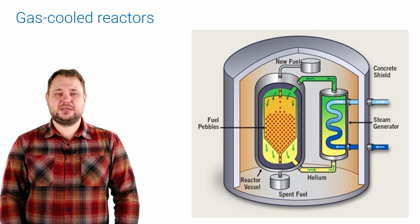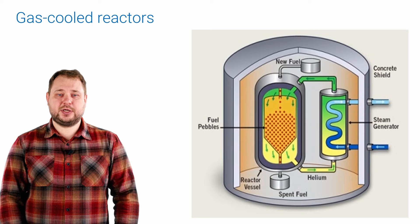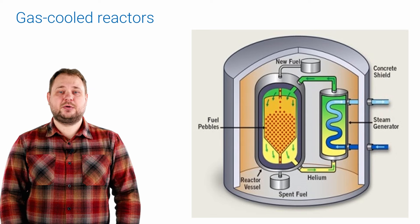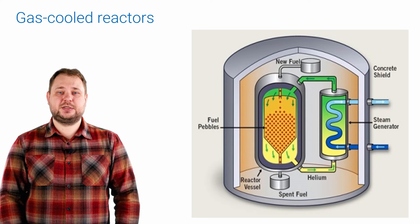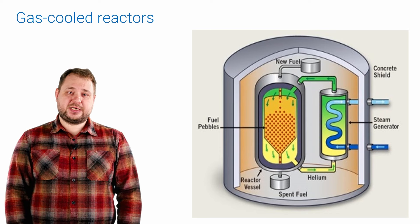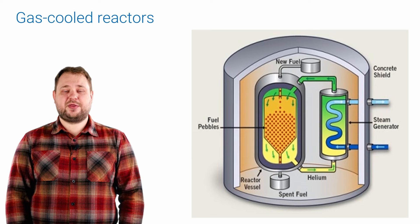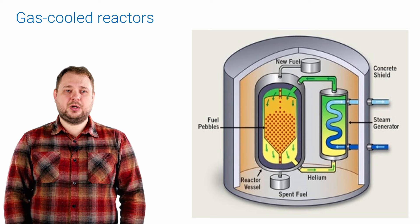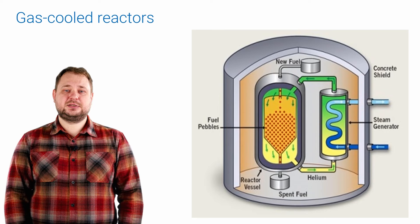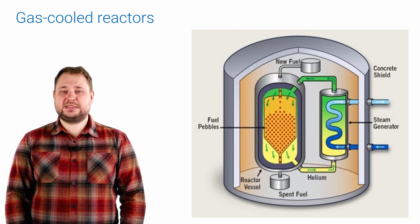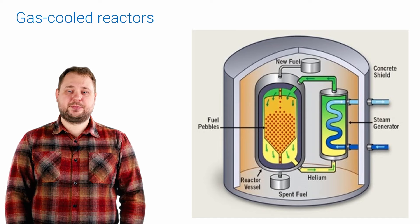The basis of HTGR is the reactor runs on tri-structural isotropic TRISO particle fuel. TRISO fuel consists of poppy-seed-sized particles containing uranium, carbon and oxygen. To contain nuclear products, the fuel is enclosed in three layers of carbon and ceramic shells. These particles are then formatted into cylindrical pellets or spheres the size of billiard balls, called pebbles. This fuel has increased strength and is more resistant to neutron irradiation, corrosion, oxidation and high temperatures.